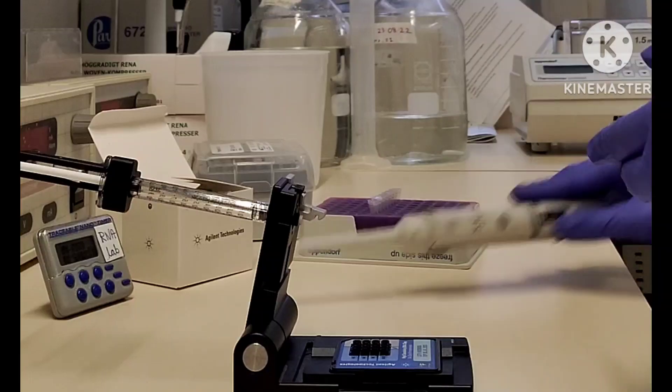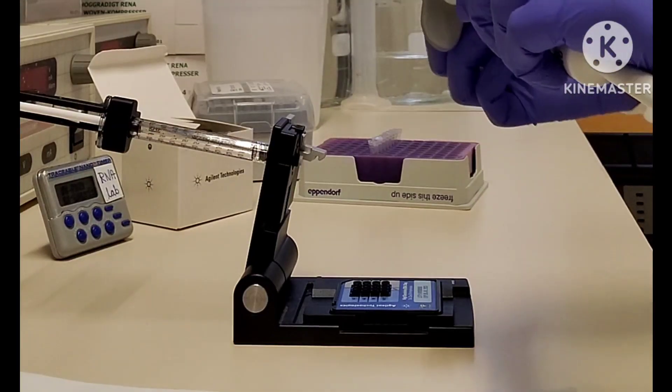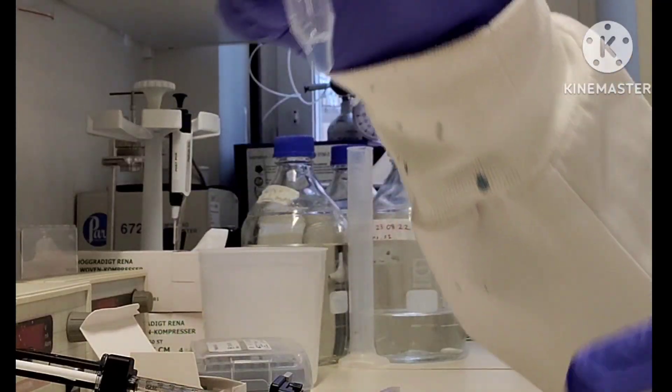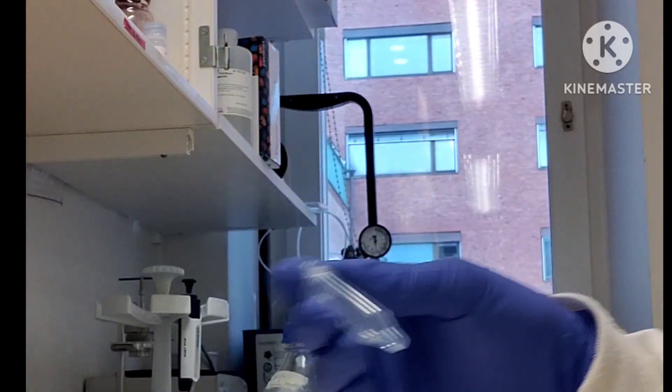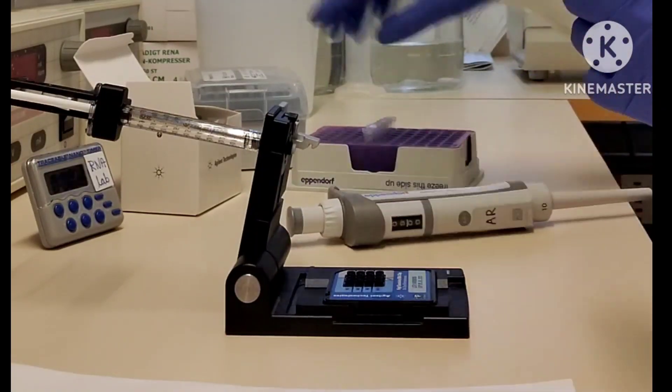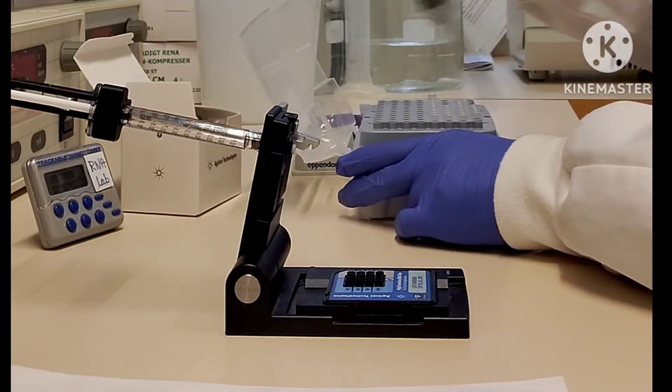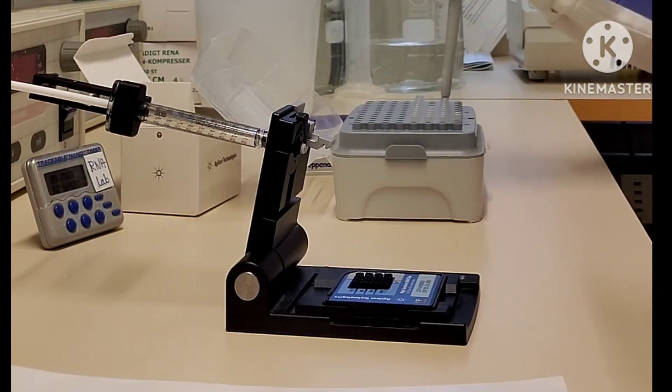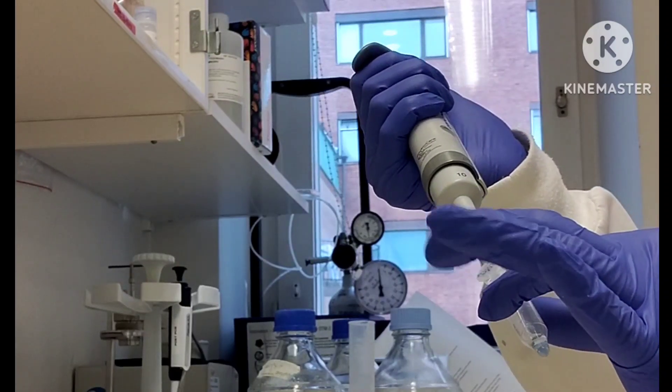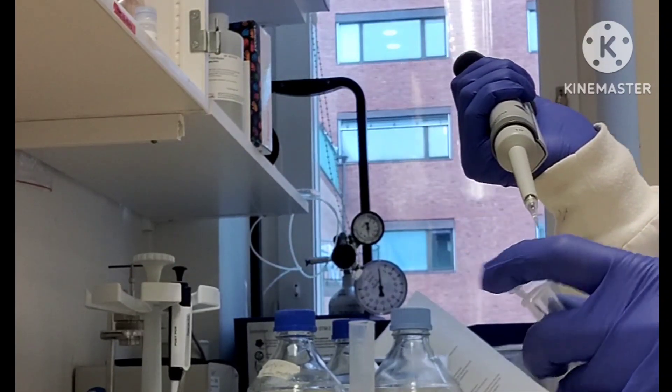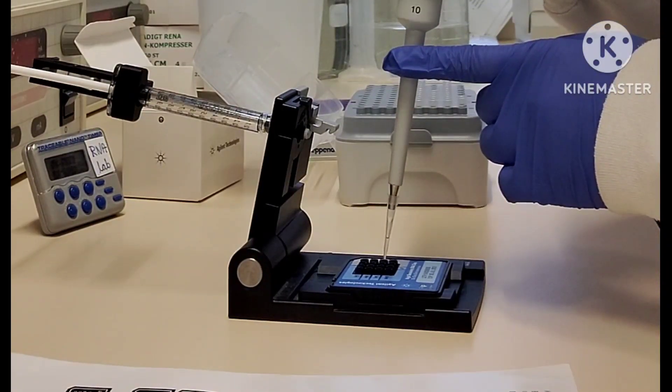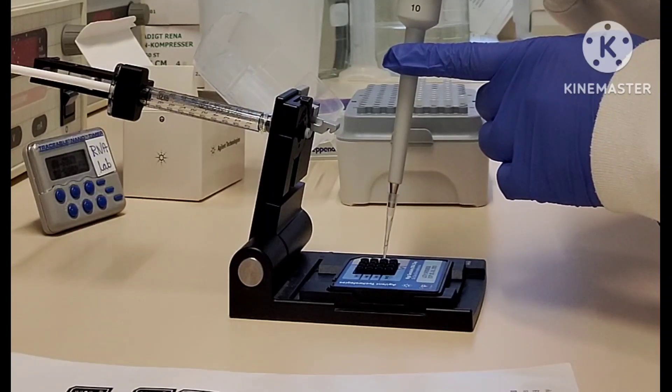Before starting this experiment, take out all the reagents and keep them at room temperature for at least 30 minutes. This is the gel dye which I previously made. Here I want to give a small tip to you all: since the gel dye is very viscous in nature, you can reverse pipette it and always pipette very slowly to take the perfect amount of gel. Add that gel dye in the correct well.